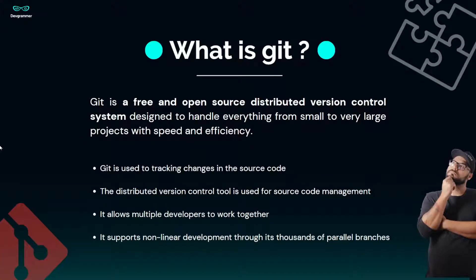So let's start with what is Git. Technically, Git is a free and open source distributed version control system. Imagine a scenario where you and your four friends are working on a group project and at a certain time you change the code base — you added one feature or removed one feature. So how will your team members get to know what change you have done? Git provides features to help with that. With the help of Git, we can track the changes in our source code.